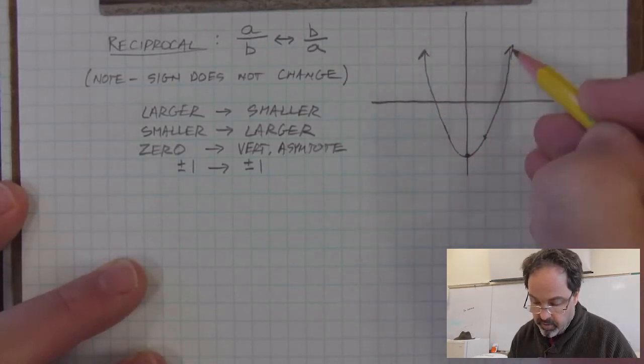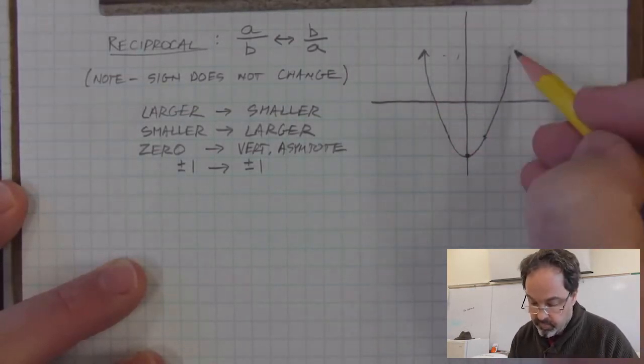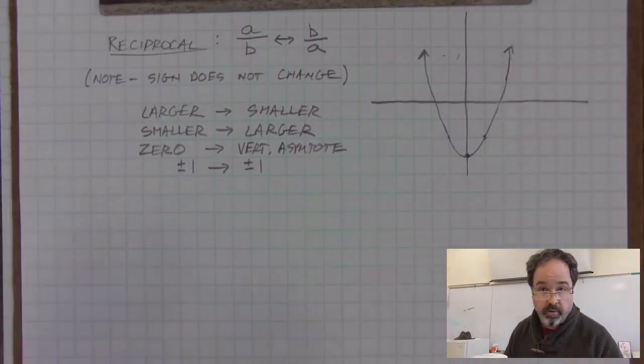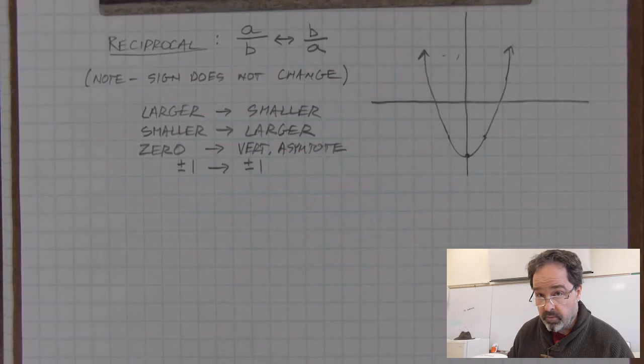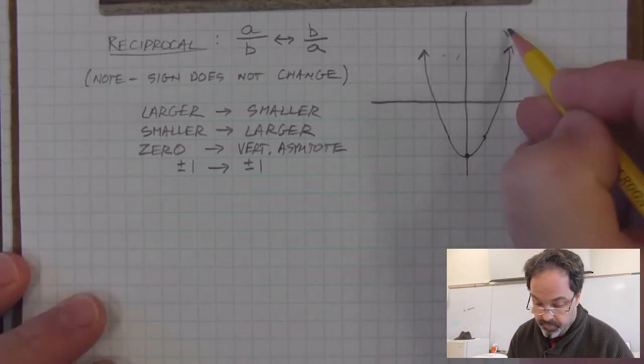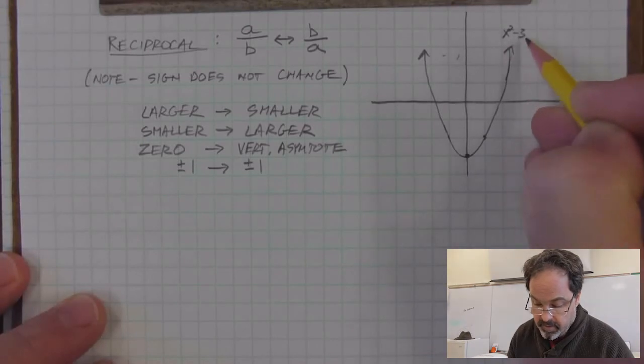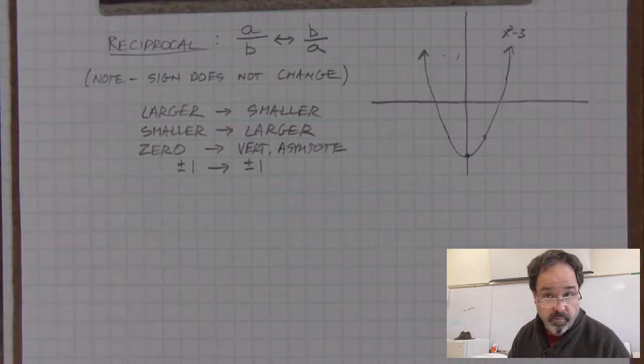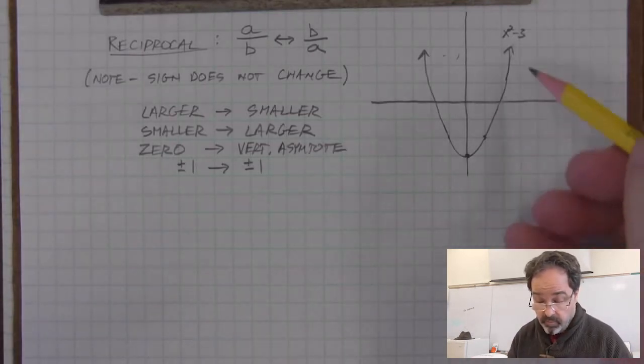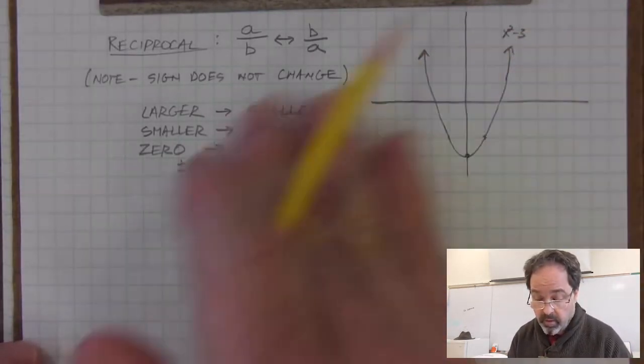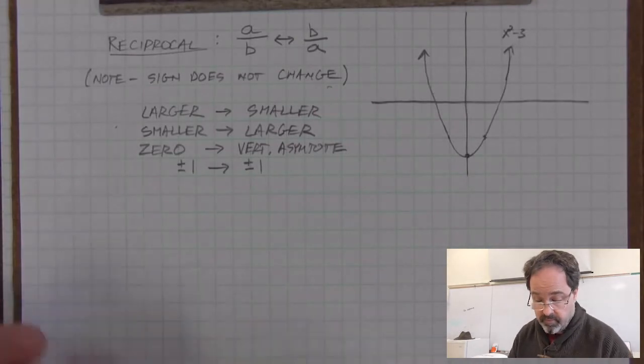So the parent parabola shifted down 3. Here's its approximate graph. So this is a function x squared minus 3. What would the reciprocal of x squared minus 3 be? It's going to be 1 over x squared minus 3, a completely different function. But we can graph the reciprocal of this parabola quite easily. Here's how it's done.